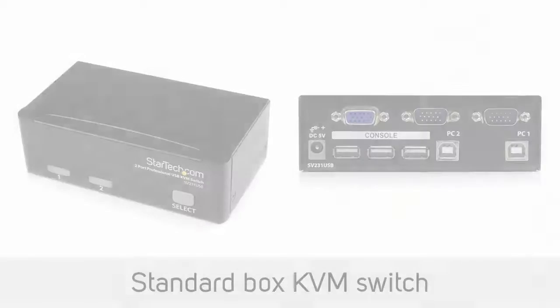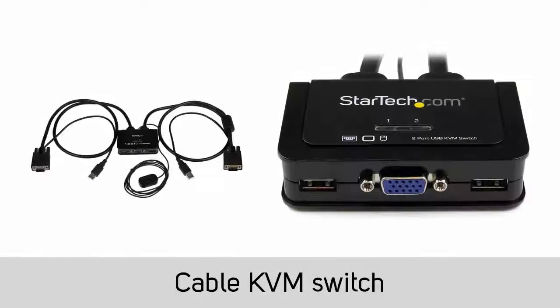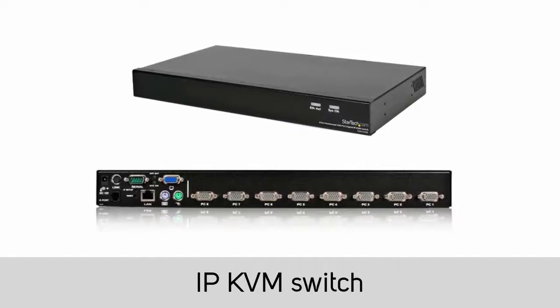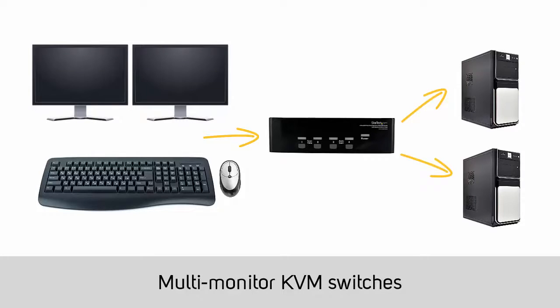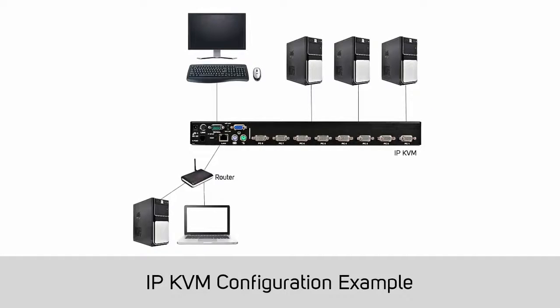There are several types of KVM switches. First, we have a standard box KVM switch. Here is a cable KVM switch. Next, we have a multi-monitor KVM switch. Finally, here is an IP KVM switch. Standard box and cable KVM switches are a simple way to switch the keyboard, display, and mouse between multiple computers. Multi-monitor KVM switches allow you to switch multiple displays between computers, and IP KVM switches allow you to remotely control the KVM switch and the connected computers through your network.